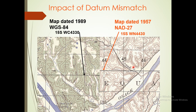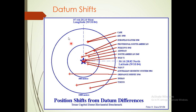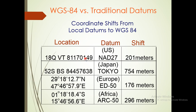The impact of datum mismatch: if you have a map dated 1989 and compare it with one from 1957, you can see they are slightly off — the same place appears shifted. This is the datum shift. From WGS84 at the center, all the local datums have differences. WGS84 will synchronize with the datum shift. For example, Tokyo shows a 700 to 500 meter shift — quite a significant difference.